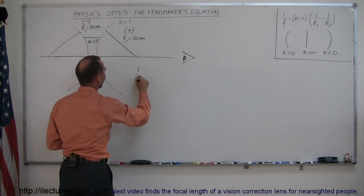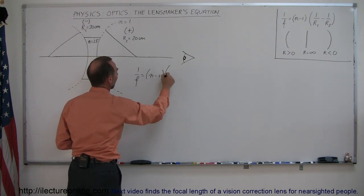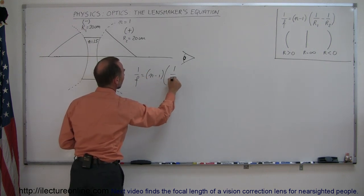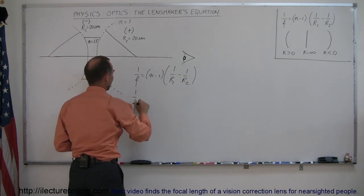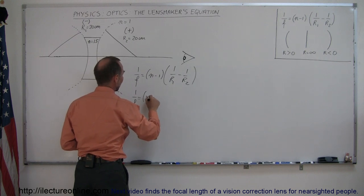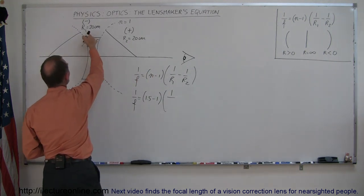So, Lensmaker's equation: 1 over F is equal to N minus 1 times 1 over R1 minus 1 over R2. And so 1 over F is equal to 1.5 minus 1 times 1 over R1, and R1 was a negative 20 centimeters, so it's a minus 20 minus 1 over R2.